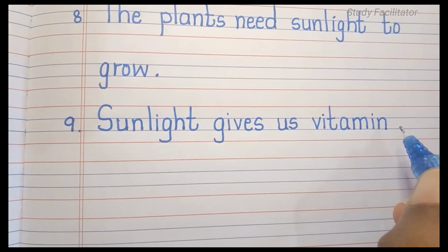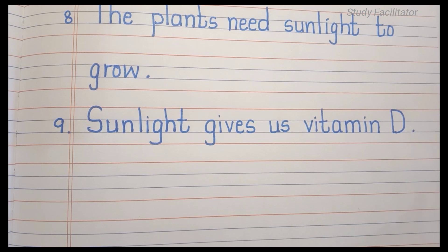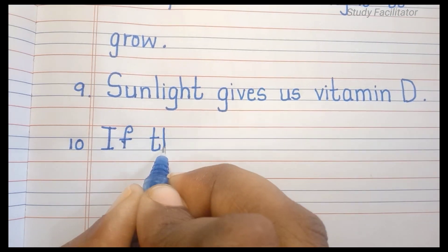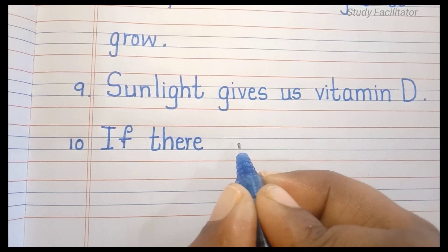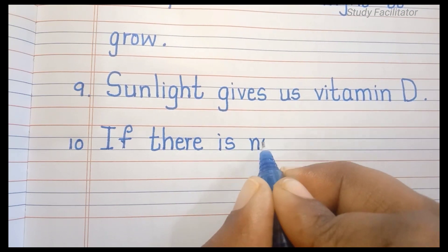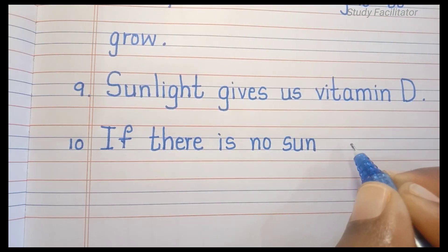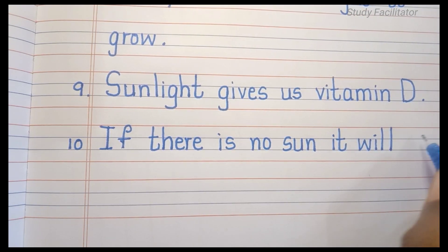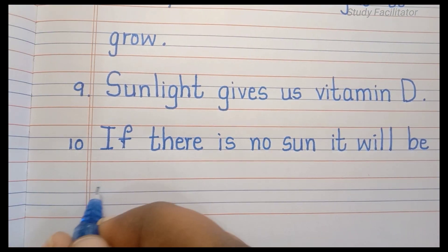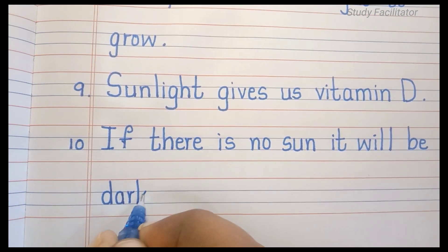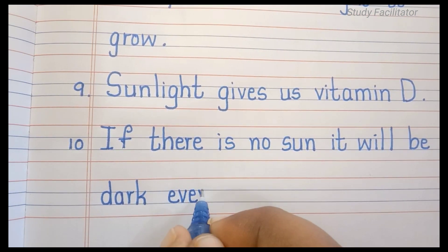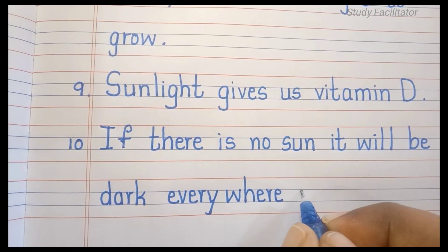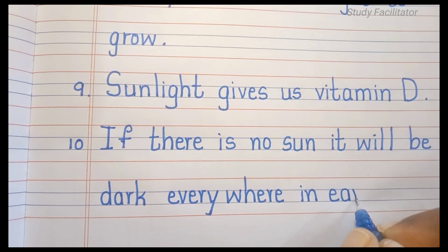Sunlight gives us vitamin D. If there is no Sun, it will be dark everywhere on Earth.